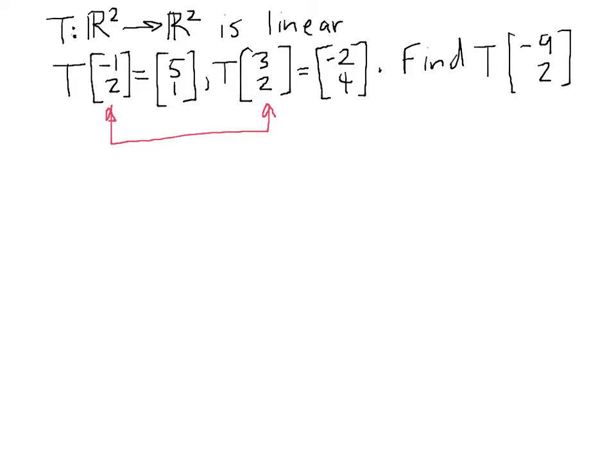Which means that any vector in R² can be made as a linear combination of those two vectors. So our vector [-9, 2] we should be able to write as a linear combination of [-1, 2] and [3, 2]. So let's see how we do that.